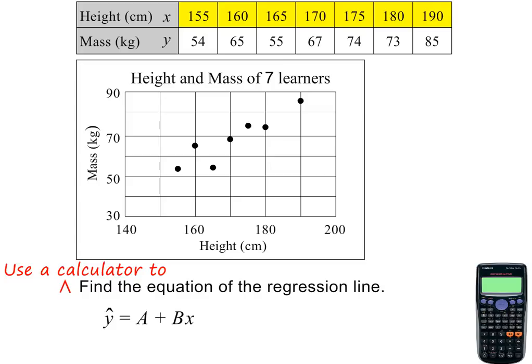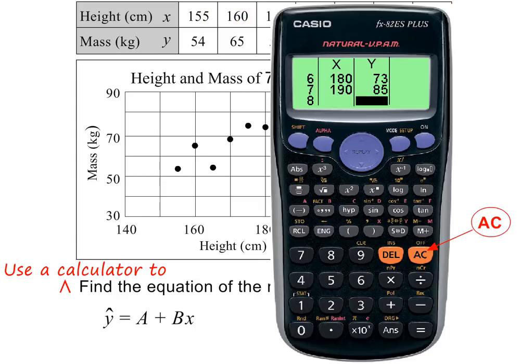Next, you need to enter the x values in the x column. Use the equal sign to get to the next row. Then you need to use the arrows on the blue circle to go to the top of the y column. Once there, you need to enter all the y values, again using the equal sign to get to the next row. After entering all the x and y values, you need to press the AC button. This will clear your screen.